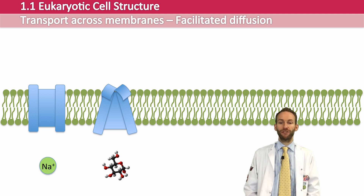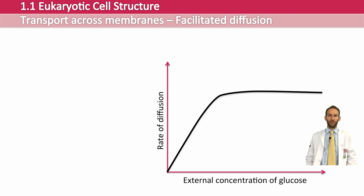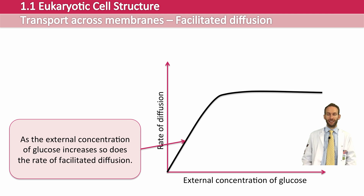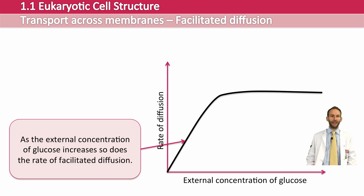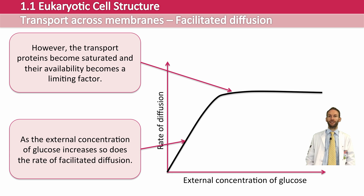Here is a graph showing what happens to the rate of diffusion as you increase the concentration of the molecule — for example, glucose — on one side of the membrane. As we increase the concentration gradient, we get a faster rate of diffusion, which is unsurprising. But because this is facilitated diffusion, there becomes a point where the graph plateaus and levels off. That is because at that point, it doesn't matter how much more glucose we add — all of the transport channel proteins are occupied. They're saturated, so the rate can't go any faster, and it just levels off.